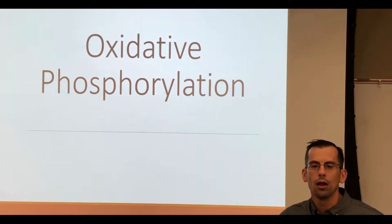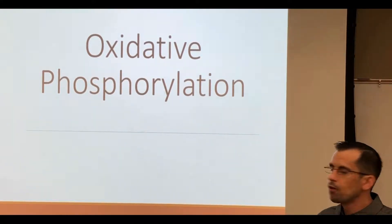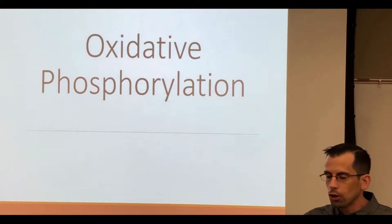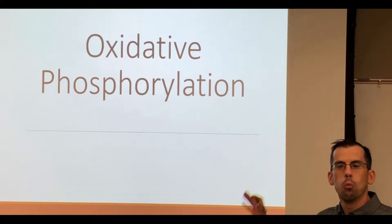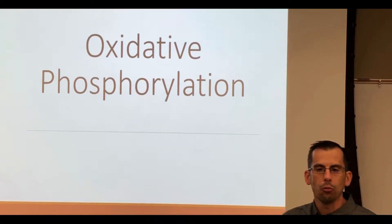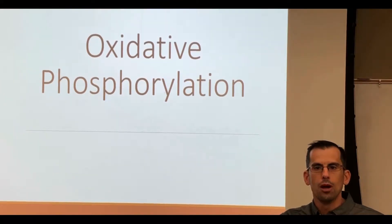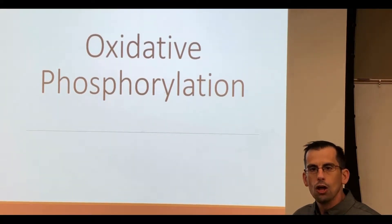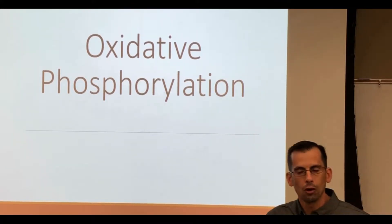Welcome to our next video on oxidative phosphorylation. We've tried to set these up as a series because this is just one of the biochemical pathways in the production of our ATP. As you study these pathways — glycolysis, Krebs, oxidative phosphorylation, and beta oxidation — none of these pathways are stand-alone. They are individual cogs in a larger ATP-producing machine.